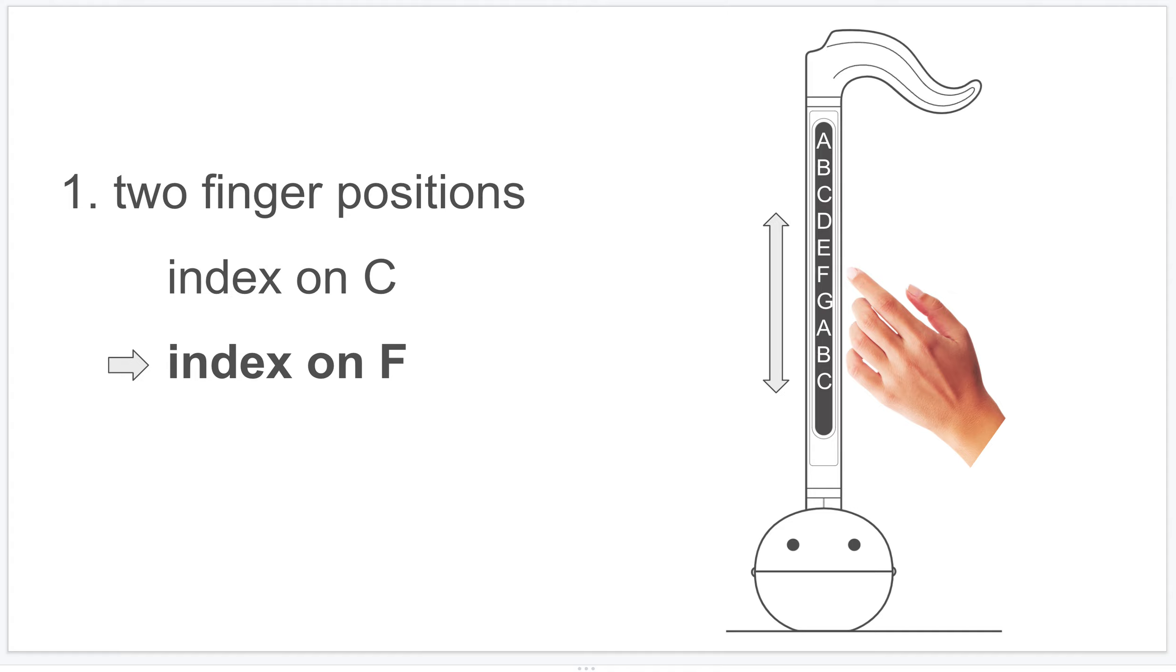You may ask why the index finger is on F instead of G. That probably also works, but I feel that's too much a jump. If it's more jumps, it will be less precise. Another reason is I find that the lower part, the bottom part of the otamatone, the sound quality there is not very good. So sometimes I don't really care about the bottom part that much. Even the high C doesn't sound very good. So I just do the F as the second finger position.